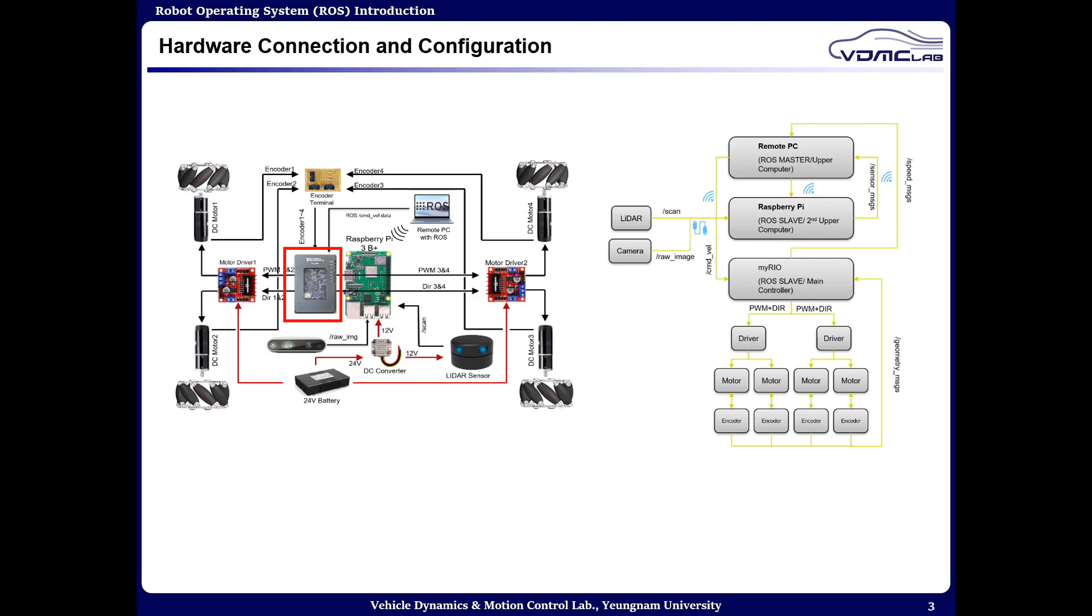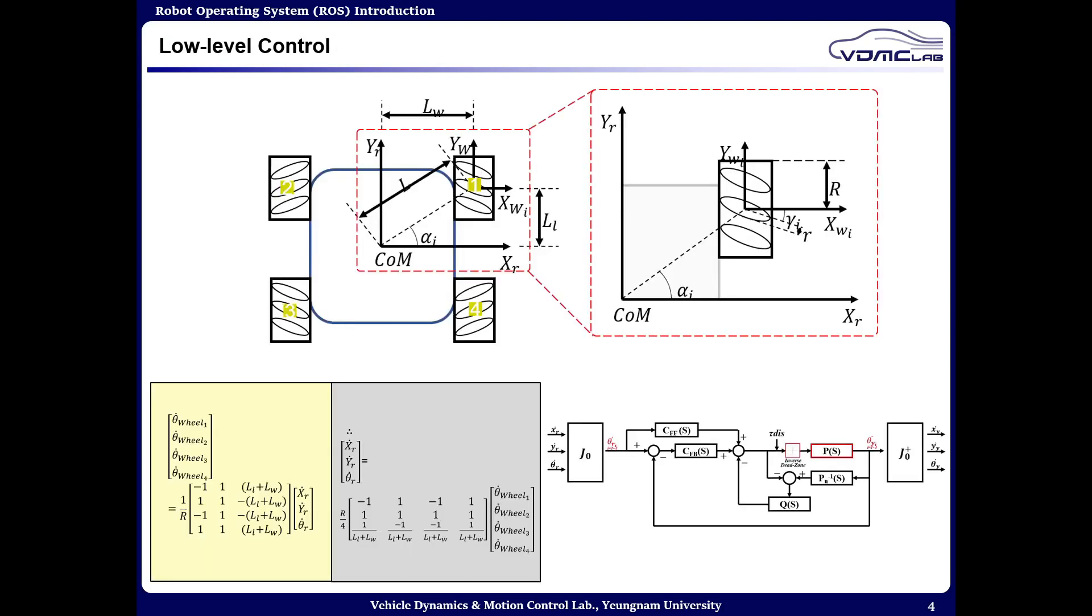The third one is myRIO which is responsible for low-level control of the motors and collecting the velocity data from the encoders and sending it to the ROS master. This is the block diagram of the control system where feedforward and feedback control are introduced to the plant along with inverse dead zone.